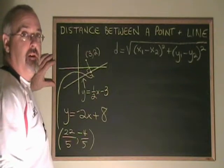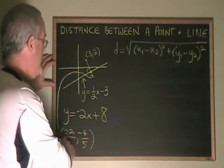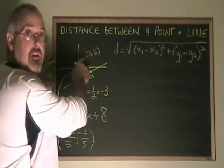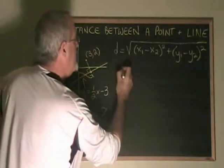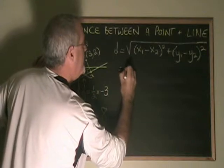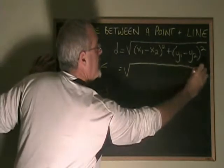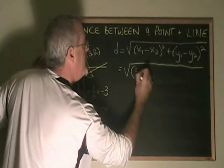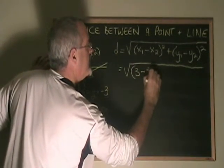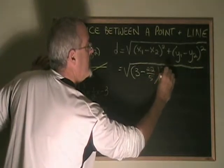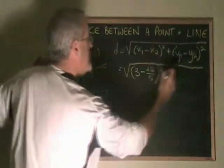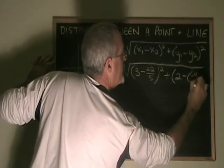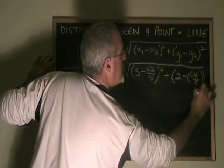Using the distance formula, we plug in the x and y coordinates of the point we found here and the point that was originally given here. And we get square root of 3 minus 22 fifths squared, plus 2 minus negative 4 fifths squared,